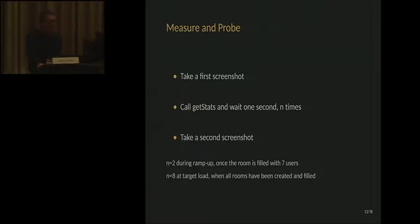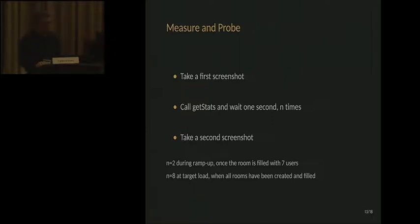We start a new room and for all seven participants take a screenshot, wait one second, twice, while doing a ramp-up adding new rooms — calling getStats in between — before taking a second screenshot to confirm there is no frozen video.